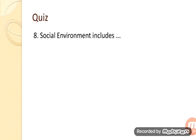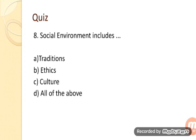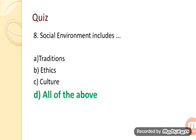Next question: Social environment includes? Option A: Traditions. Option B: Ethics. Option C: Culture. Option D: All of the above. The correct answer is option D — All of the above.